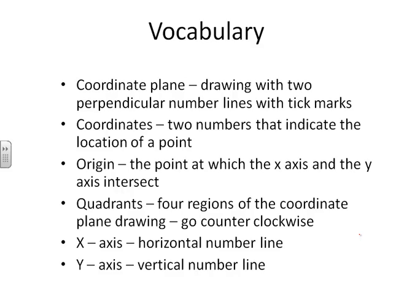The quadrants are the four regions on the coordinate plane drawing. They go counterclockwise. Then we have two axes. We have the x and we have the y-axis. The x runs along the horizontal number line, and the y-axis runs along the vertical number line. We'll talk about all these with a coordinate plane in front of us so you can see what we're talking about.